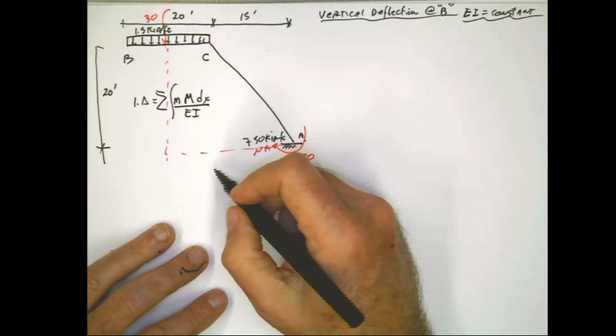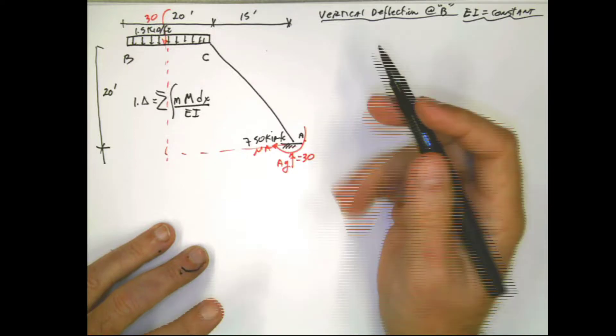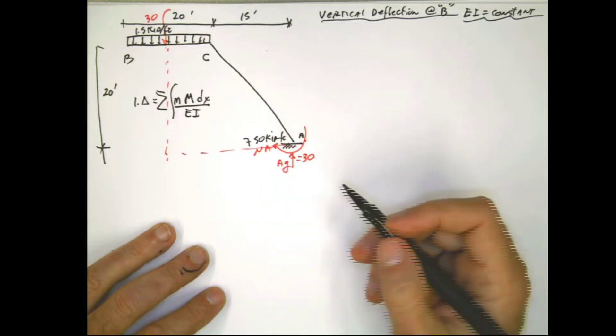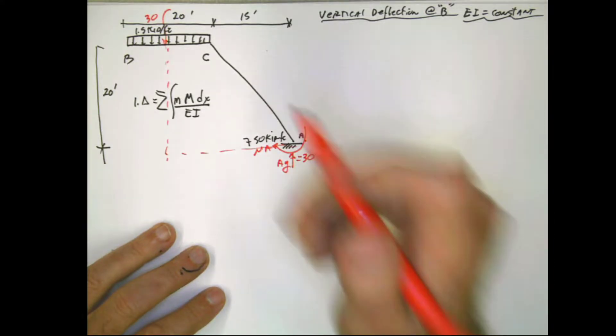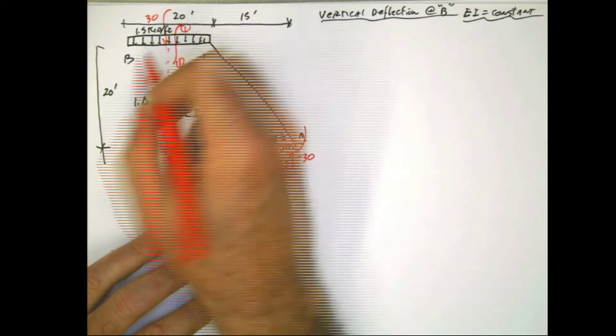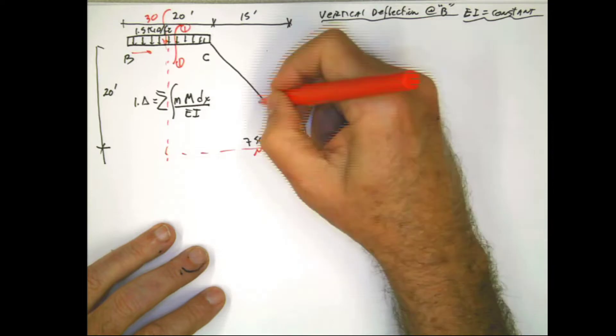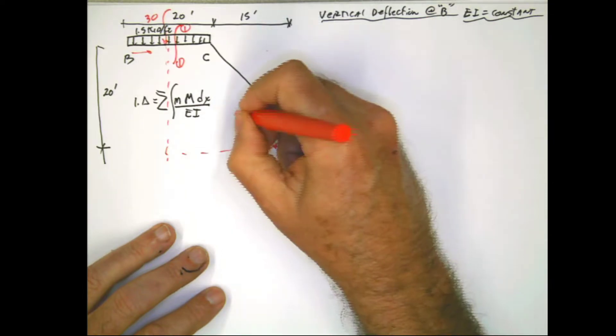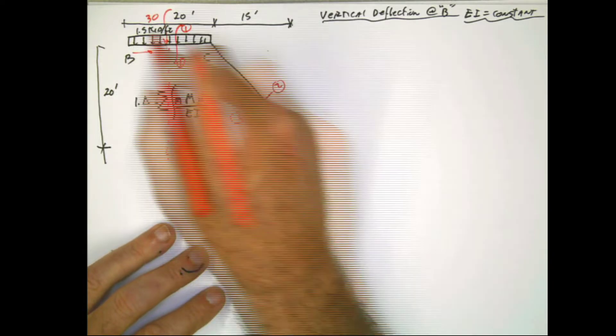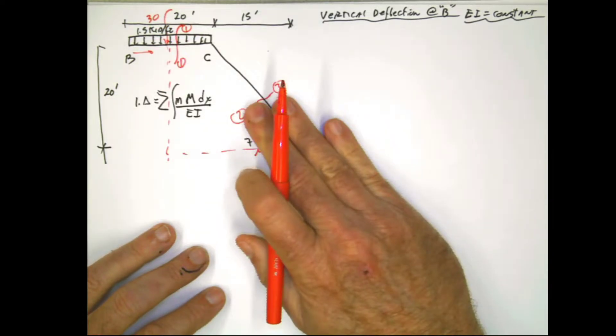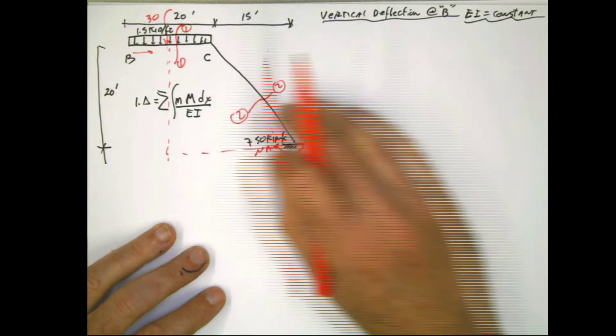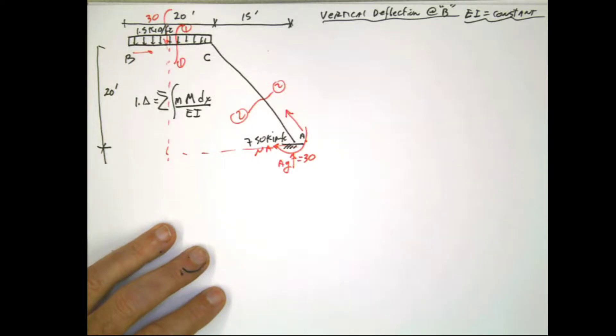Those are the values for the reactions. Remember, these values come from summation of forces in X, summation of forces in Y, and summation of moments. Once we have that, once again, we have to establish equations that define the entirety of the structure. So for that, we need to do two cuts. I can do one cut 1-1 here in this direction. And I can do another cut 2-2 here in this direction. I could have also done 2-2 in this direction. It's possible. It's doable. But whatever I do in the real structure, I have to keep in the virtual structure, which is the second step.